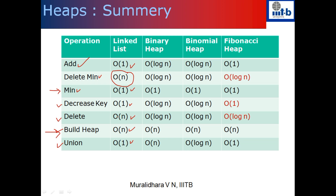What is very costly in the linked list is the delete minimum. Since delete minimum is costly, delete is also costly. This is precisely the reason why we went from a linked list to the binary heap representation. With the binary heap, instead of O(n), we were able to delete the minimum in O(log n) time, and so delete also became O(log n). But we lost on the decrease key — if we have to do decrease key, we have to do O(n) computations. Add also became costly.